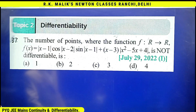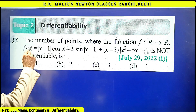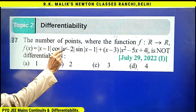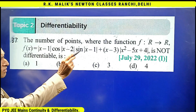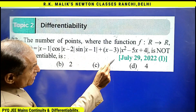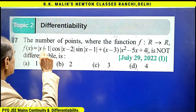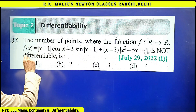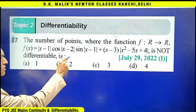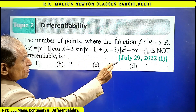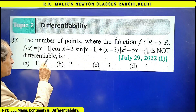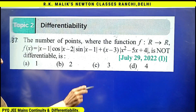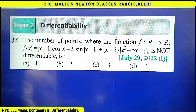In this question, we are asked to find the number of points where the function f: ℝ → ℝ defined by f(x) equal to this expression is not differentiable. We have to find the correct choice.